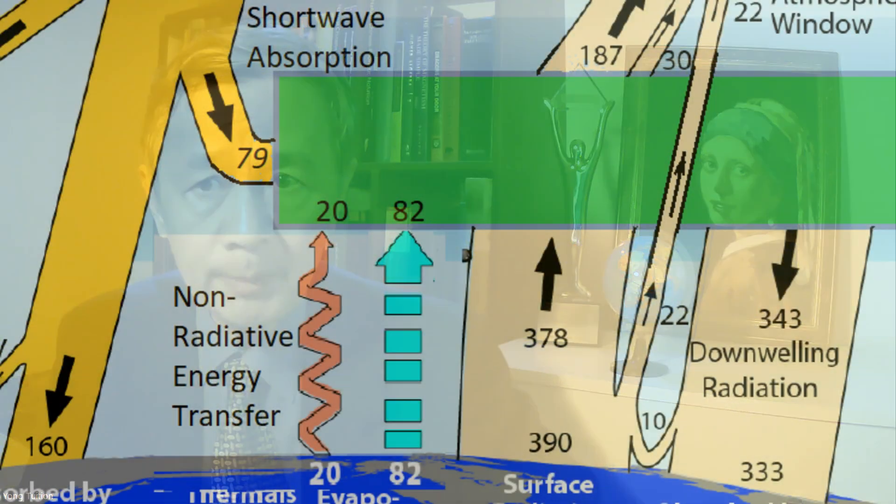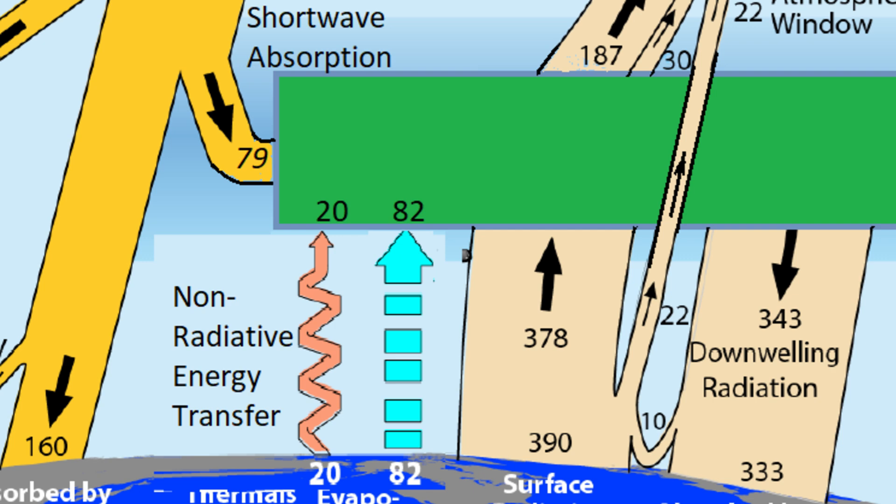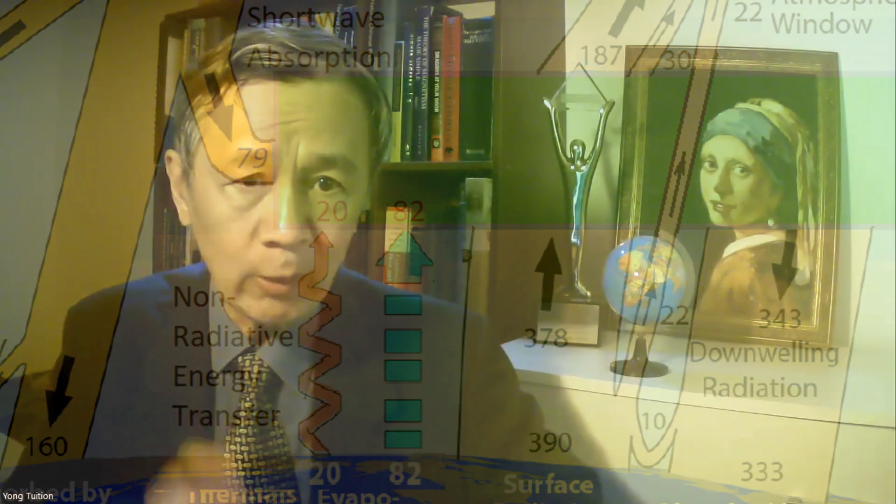So 560 minus 378 equals 182. As far as longwave cash flow is concerned, there is a shortage of 182 in supply. The additional income for the greenhouse must be shortwave absorption from the sun by the atmosphere, 79, and non-radiative processes, 102 (that is 20 plus 82). The subtotal is 181 — he nearly made it! Although there is a tiny deficit of 1 W per meter squared.